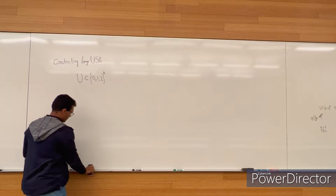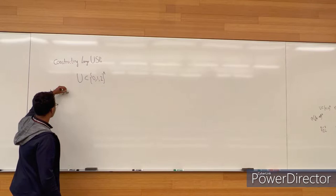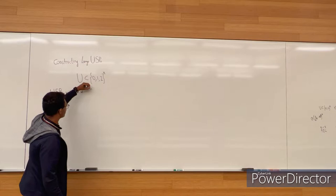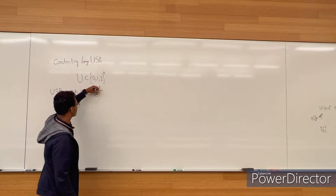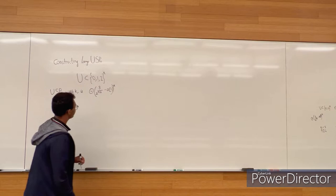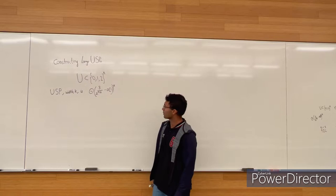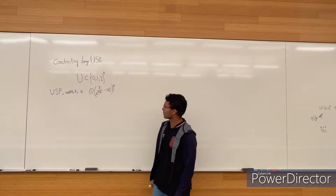The Coppersmith-Winograd theorem states that the largest USP for any width k is going to be Θ((3/2)^(2/3) − o(1))^k. The Coppersmith-Winograd construction states that for width k, the largest USP they can construct has size Θ((3/2)^(2/3) − o(1))^k. This is a big claim we are going to prove throughout this presentation.